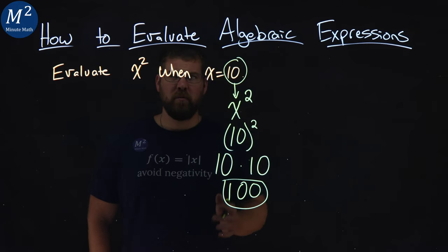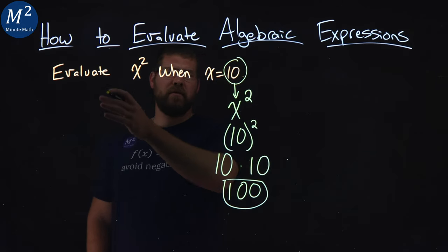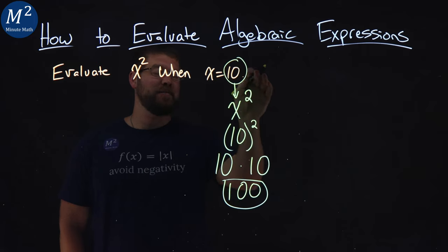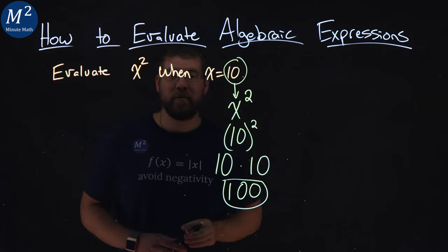And there we have it. When we have x squared, we went and evaluated it, or we evaluated x squared when x equals 10, and got 100.